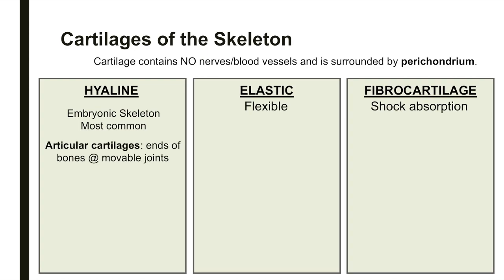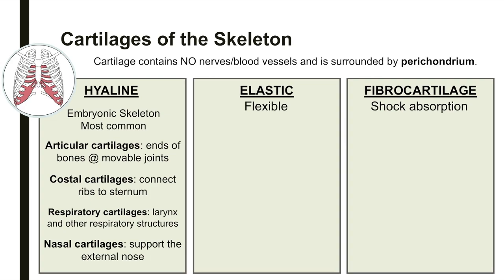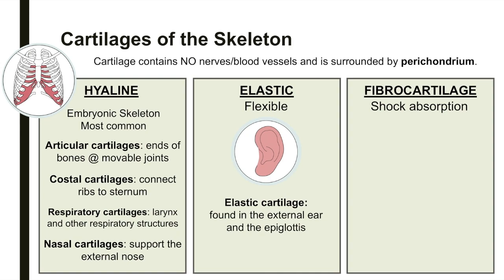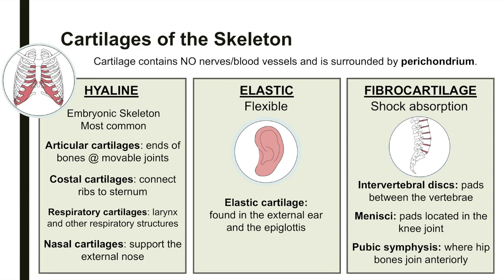Articular cartilages, costal cartilages, respiratory cartilages, and nasal cartilages are all different types of hyaline cartilage. Elastic cartilage is found in the external ear and the epiglottis. Fibrocartilage makes up intervertebral discs, the meniscae of the knee, and the pubic symphysis.